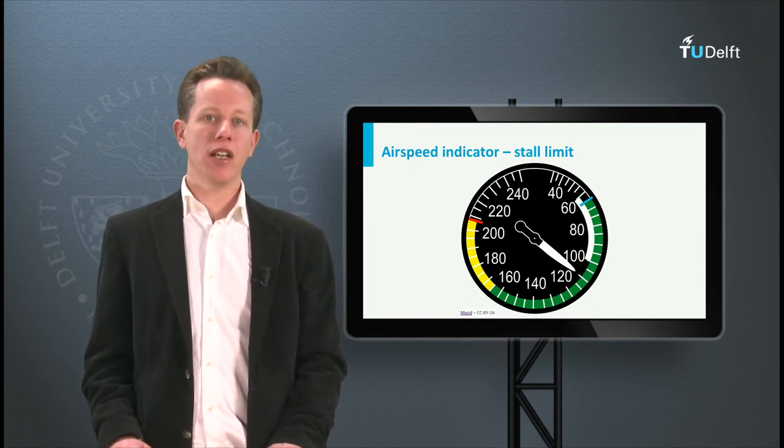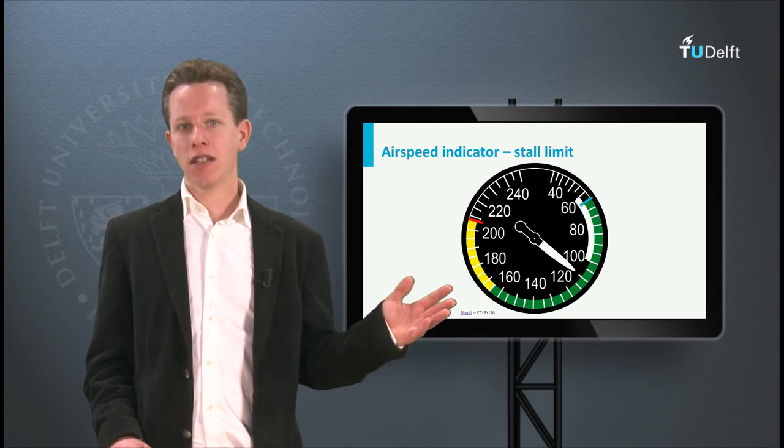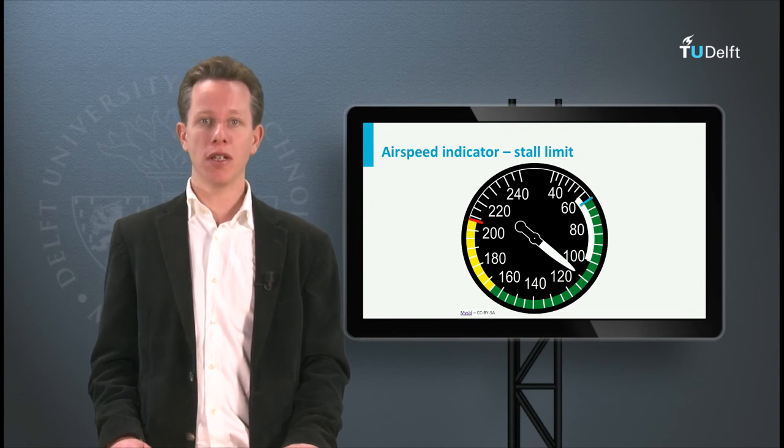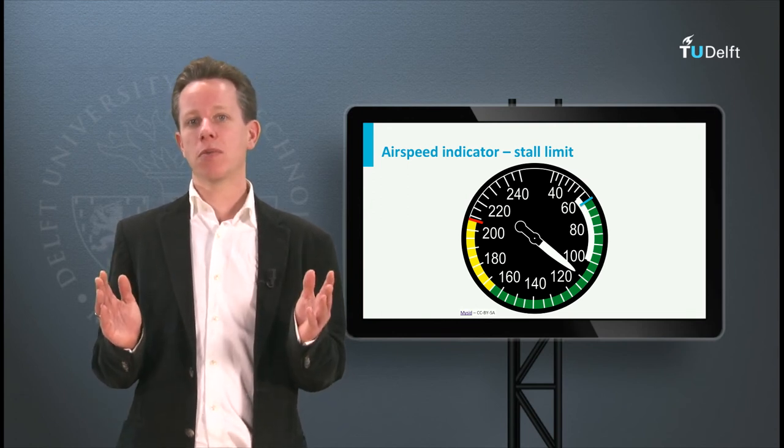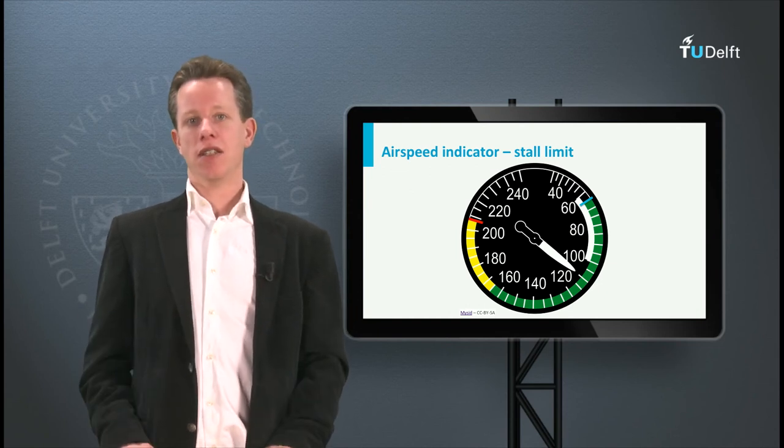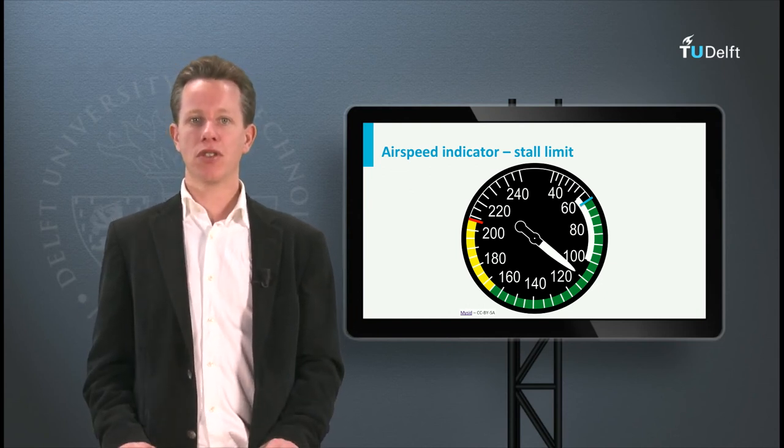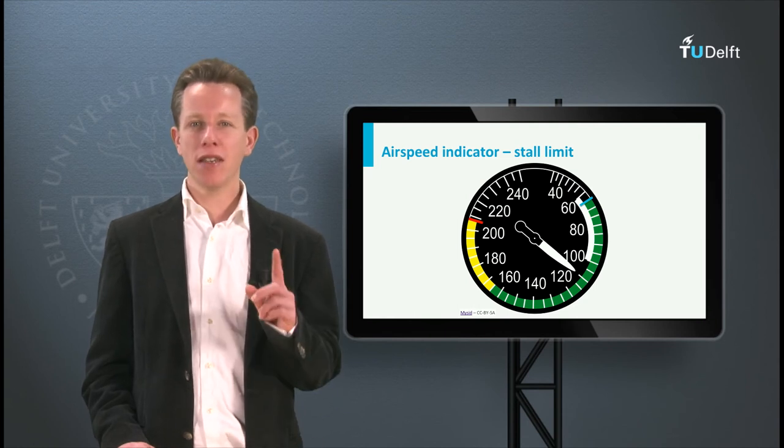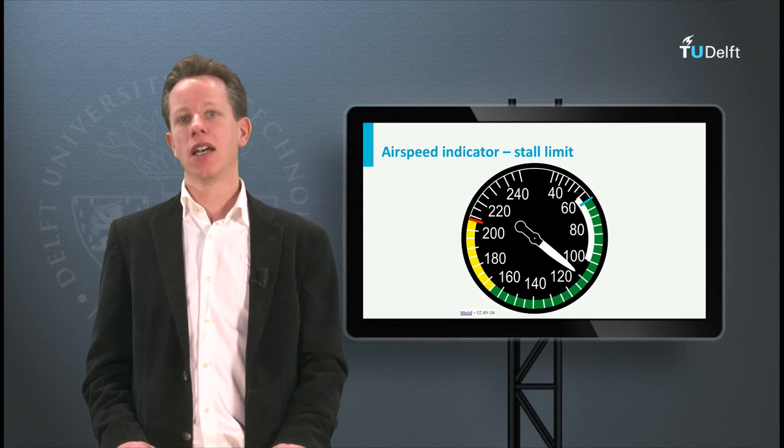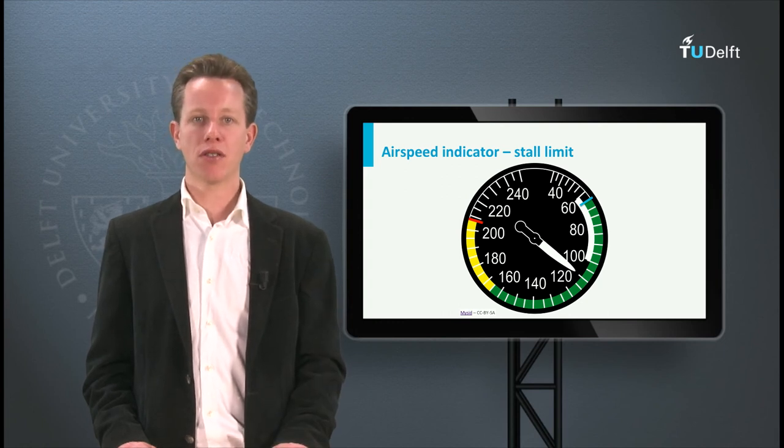This may seem strange, an airspeed indicator that does not provide the right value, but that is always correct when predicting stall speed. So how do we explain this from a physical point of view? In essence, the airspeed instrument measures the dynamic pressure, and this is exactly what the wing experiences in the flow, and that is why it correctly predicts the stall condition.